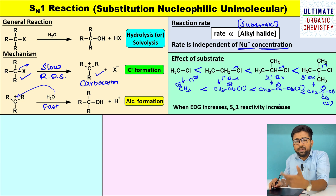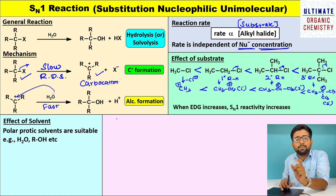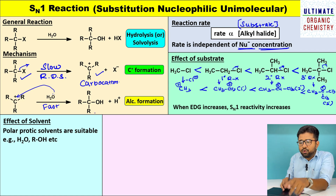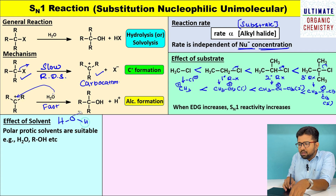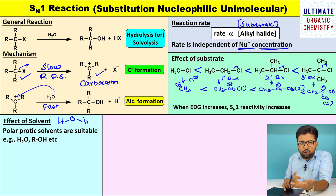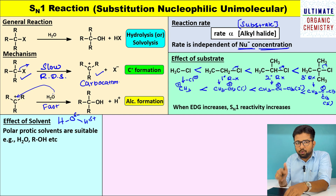Now let us discuss the effect of solvent in SN1 reaction. Polar protic solvents are suitable for SN1 reaction. What do you mean by polar protic solvent? Polar means charge separation should be there. For example, in the water molecule, oxygen is more electronegative, so oxygen carries delta minus and hydrogen carries delta plus.